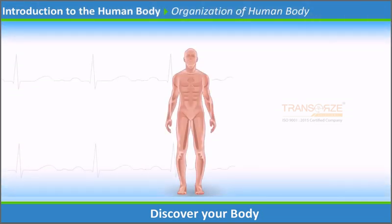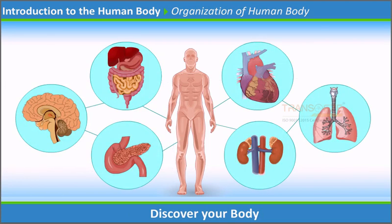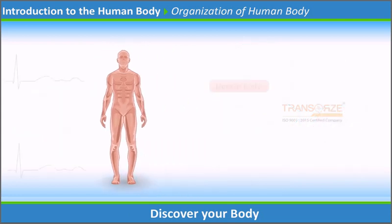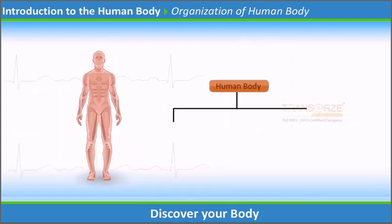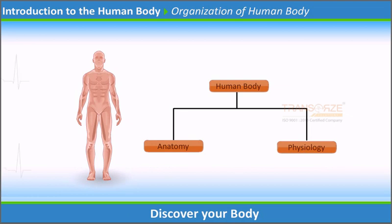Organization of the Human Body: The human body consists of many organs and systems. These systems and organs work together to support the functioning of the body. The study of the human body is divided into two areas: anatomy and physiology. Let us learn about these two components.